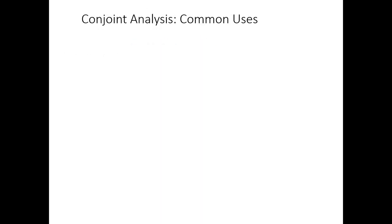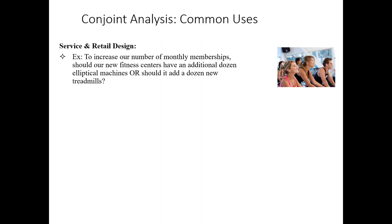Let's talk about a few more common uses of conjoint analysis to illustrate its function. Conjoint analysis is common in service and retail design. For example, imagine that we were a gym. To increase our number of monthly memberships, should our new fitness centers have an additional dozen elliptical machines or should we add a dozen new treadmills? Because of the fixed constraint of retail space in our gym, we can't do both — we have to make a trade-off between these two options.